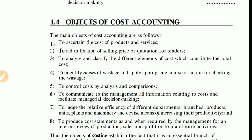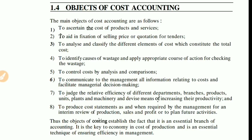The fourth objective is to control cost through analysis and comparison. Cost accounting analyzes costs that we can reduce, and compares cost to cost so that we can reduce it further. The fifth objective is to facilitate managerial decision making — by preparing statistics and communicating information to management so they can take the right decisions with respect to the cost and production process.